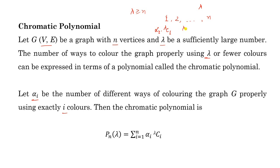Similarly, if we choose two colors, the number of ways to choose two colors is lambda C 2, and for each of these ways we have alpha 2 ways to color the graph properly, giving alpha 2 times lambda C 2. When choosing n colors, this is lambda C n times alpha n. Since we can color the graph using either one color, two colors, or up to n colors, we take the sum of all these numbers.